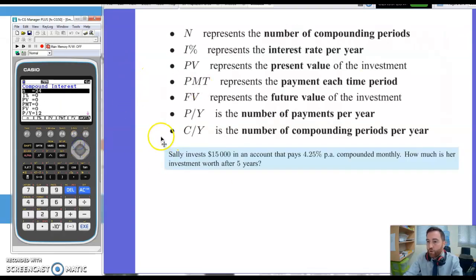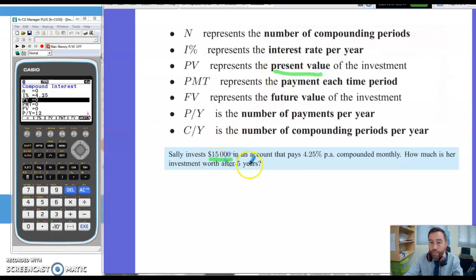So I've got a scenario here where Sally's invested $15,000 in an account. It pays 4.25% per annum compounded monthly. Now the interest rate is always per annum, always per year in this. So I'm going to put that 4.25 in here. So we've invested $15,000, so that is the present value.